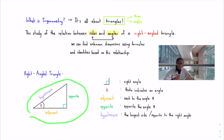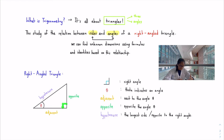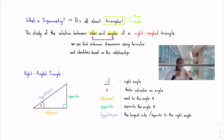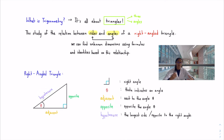What we have on the screen is a typical right angle triangle. The first thing to notice is the right angle, indicated by a little box. A right angle is 90 degrees formed by two perpendicular lines. We need to be familiar with three special components: the hypotenuse, the opposite side, and the adjacent side. The hypotenuse is the longest side and is opposite the right angle.